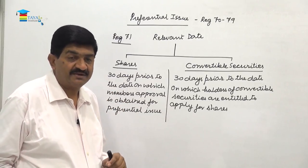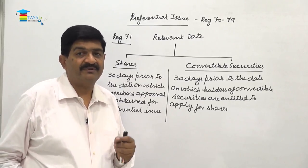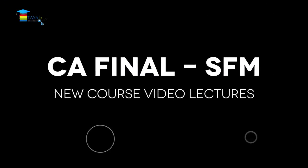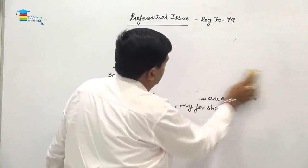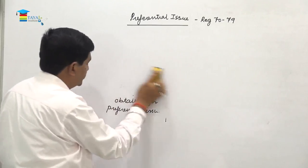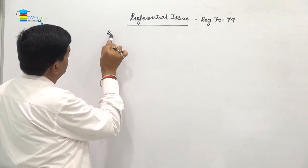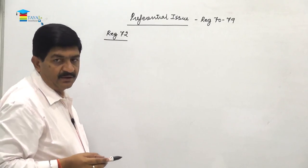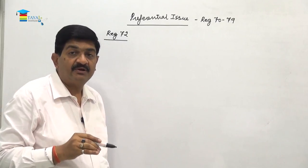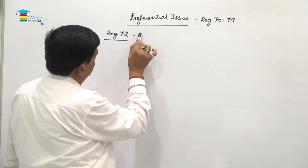This is regulation number 71 on relevant date. Now regulation number 72 talks about conditions for preferential offer. This regulation is important and independent exam questions can be based on it.